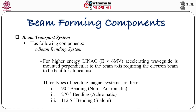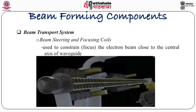The beam transport system has the following components: a beam bending system for high energy linacs where energy of the photons is more than or equivalent to 6 MV — the accelerating waveguide is mounted perpendicular to the beam axis, requiring the electron beam to be bent for clinical use. Three types of bending magnet systems are used: 90-degree bending (non-achromatic), 270-degree (or 112.5-degree) bending, and 70-degree bending. The figure shows the waveguide, beam steering, and focusing coils used to constrain or focus the electron beam close to the central axis of the waveguide.